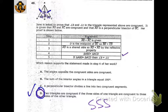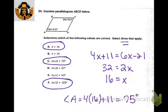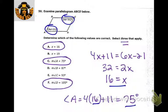Which of these are correct? We set the opposite angles equal to each other and solve for x, getting 16. For angle A, plug in 16: 4 times 16 plus 11 is 75 degrees. Angle D is right next to it, so it must be supplementary: 180 minus 75 is 105.